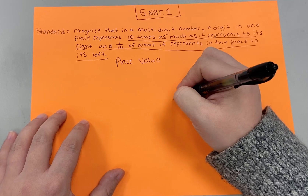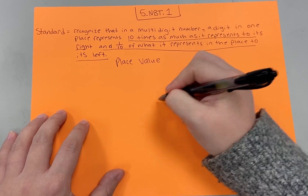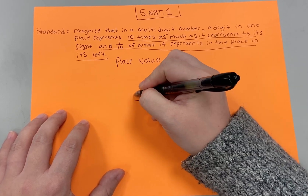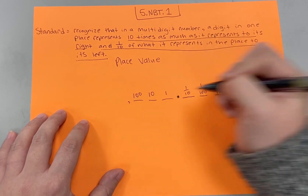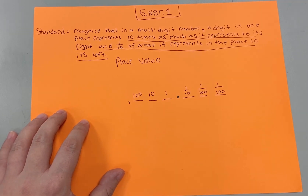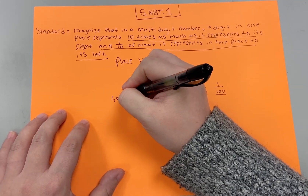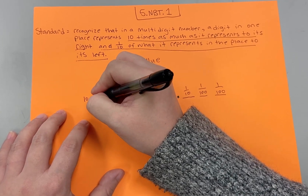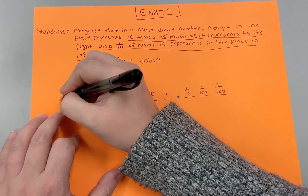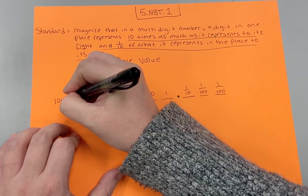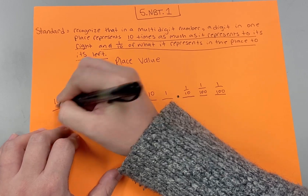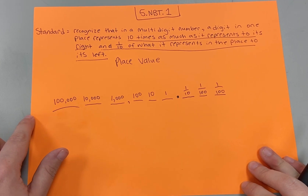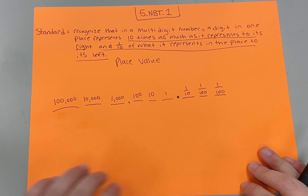To the left we have the ones, the tens, the hundreds, and a comma. We have the thousands, the ten thousands, the hundred thousands, and from there we go on to the millions, ten millions, hundred millions.